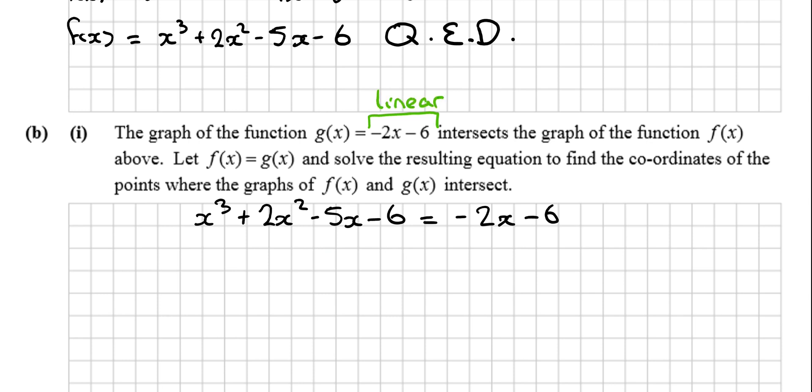So that's x cubed plus 2x squared minus 5x minus 6 is equal to minus 2x minus 6. So, we want to solve this equation. So, we're going x cubed plus 2x squared minus 3x is equal to 0.